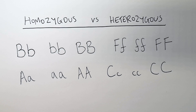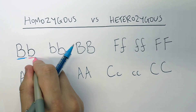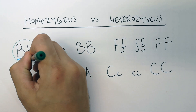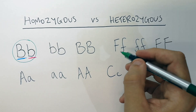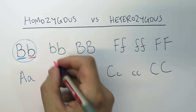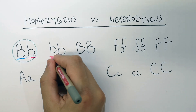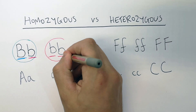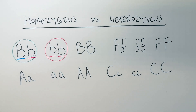Homozygous and heterozygous are ways of describing what alleles someone has. Big B, little B — this person is heterozygous because the alleles are different. Whereas little B, little B — these are the same alleles, so that means the person is homozygous.